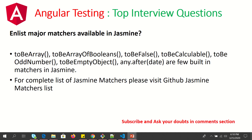Another thing commonly asked is: what are the common matchers you have used in Jasmine? You can talk about toBeArray, toBeArrayOfBooleans, toBeFalse, toBeCalculable, odd number, empty object, and so on. These are some of the built-in matchers. You can refer to the GitHub list where it lists all the matchers for complete details.